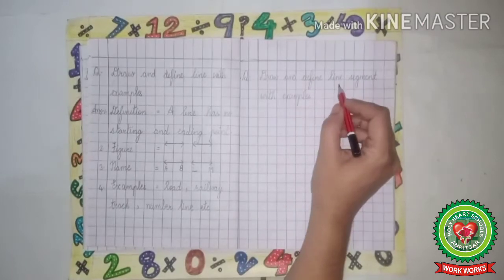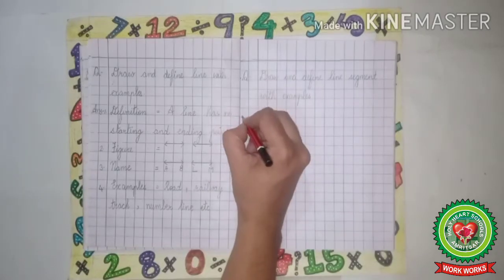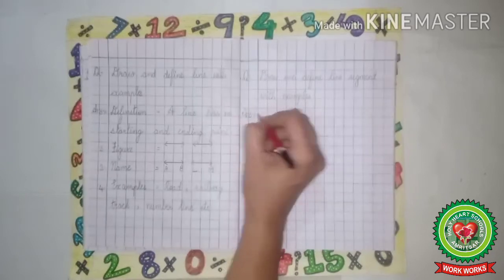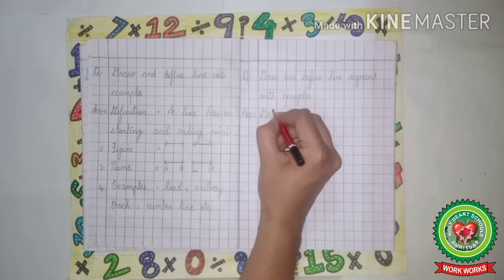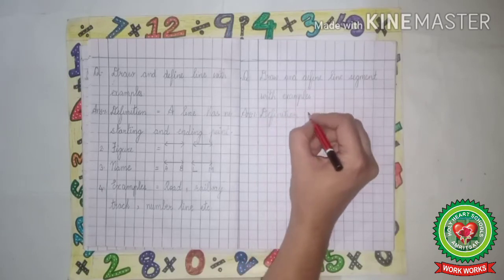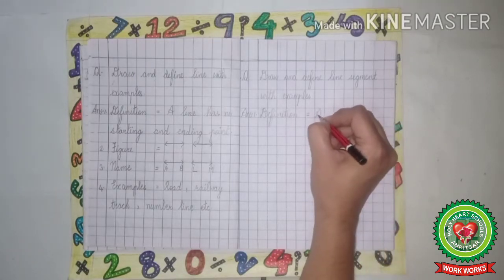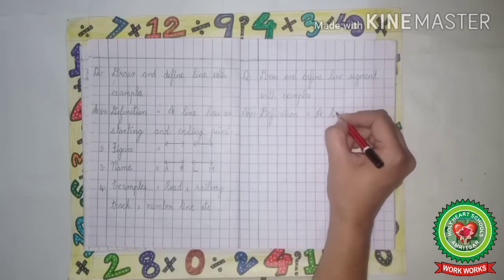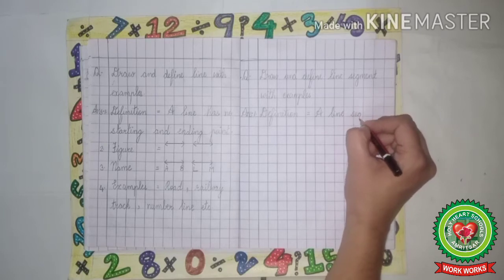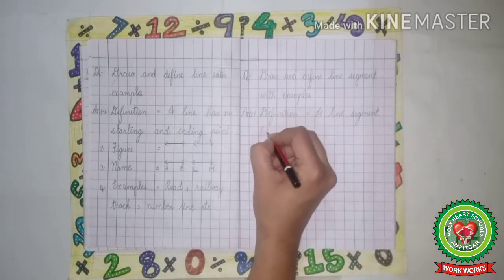Now let us see the copy approach. Draw and define a line segment with examples. Leave one line, then write ANS (answer), one dot. Now the definition: a line segment has starting and ending point.